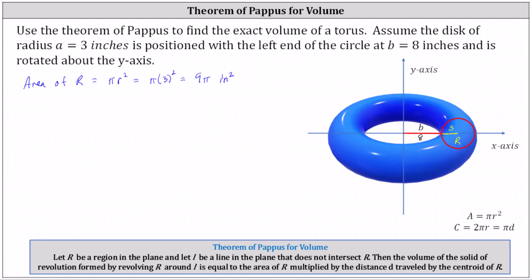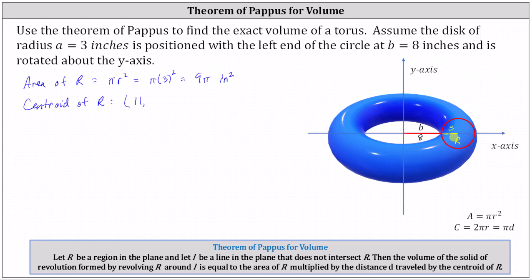Next, we need to determine the centroid of the circle, which is simply the center of the circle. Notice the x-coordinate of the center of the circle is eight plus three, or eleven. And because the center is on the x-axis, we know the y-coordinate is zero.